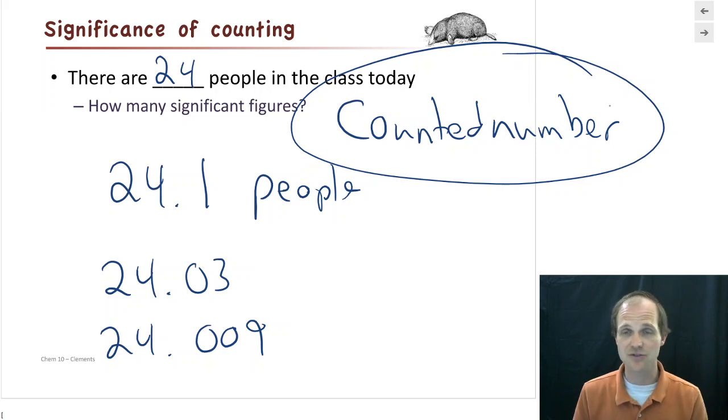Now, counted numbers can be extremely large as long as they were actually counted. I could count how many pieces of paper are in a ream of paper if I went through and counted them. Or I could estimate, it's about 450, and that would be a measured number. Estimations are also what we call measured numbers. They're measured kind of by your brain as opposed to reality. But they are measured numbers.